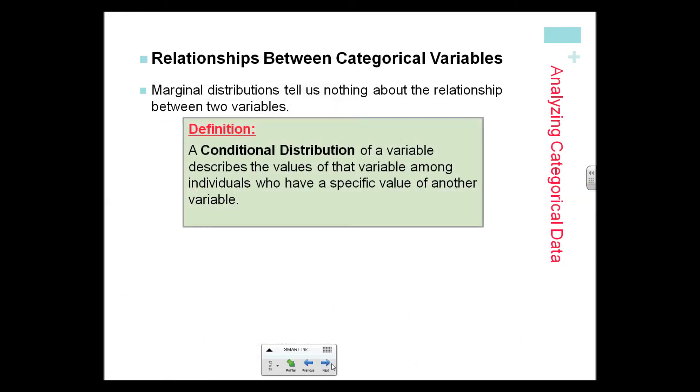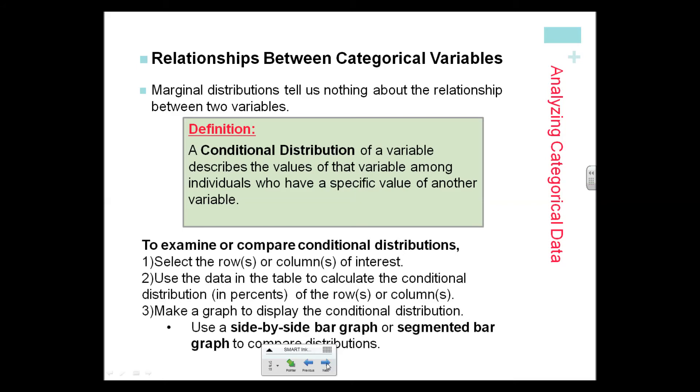Marginal distributions tell us nothing about the relationship between the two variables. That's why we need conditional distributions, and this is where I find that people get confused. Really have to pay attention to what question you're going to be asked.